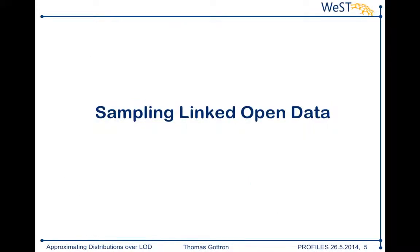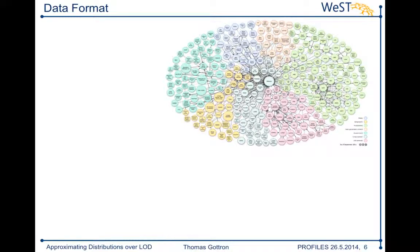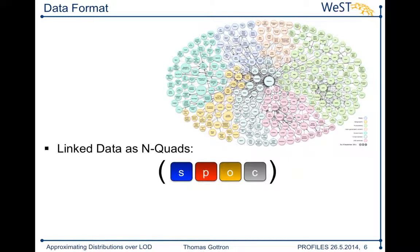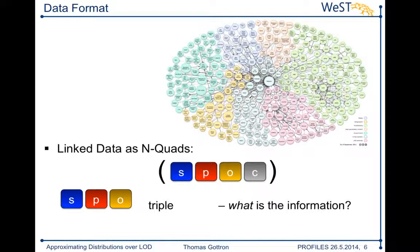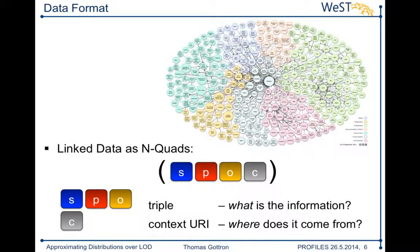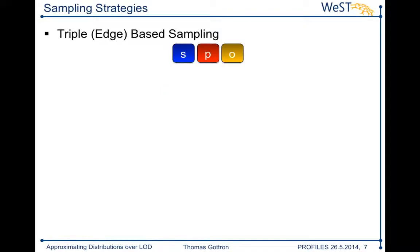Let's start by looking at how you can do sampling on the linked data cloud. I like to think of it in the nquads format. An nquad is a quadruple consisting of subject, predicate, object, and context. Subject, predicate, object is just the RDF triple — the information itself modeled on the linked data cloud. The context tells you where it comes from, giving you an idea of the provenance: the URI of the data source that published this information. With this representation, you can quickly come up with three sampling strategies. The first is sampling from all the triple statements — in graph terms, this is edge-based sampling.